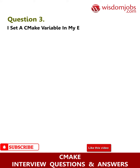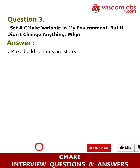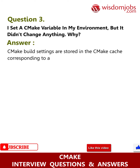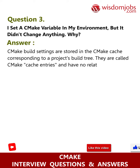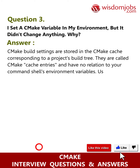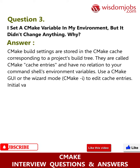Question 3: I set a CMake variable in my environment, but it didn't change anything. Why? Answer: CMake build settings are stored in the CMake cache, corresponding to a project's build tree. They are called CMake cache entries and have no relation to your command shell's environment variables. Use a CMake GUI or the wizard mode cmake -i to edit cache entries.